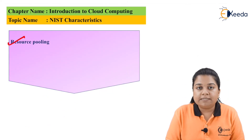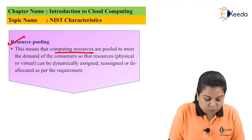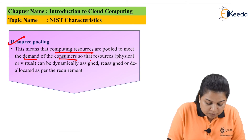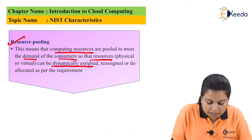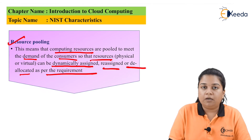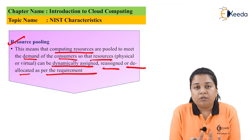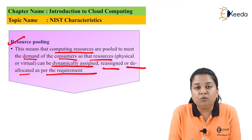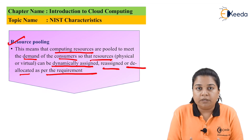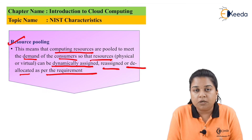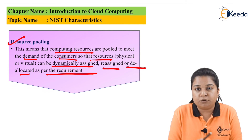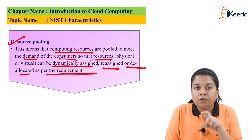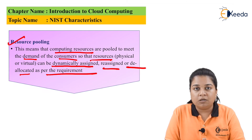Another feature is resource pooling. This means that computing resources are pooled to meet the demand of consumers, so that resources — physical or virtual — can be dynamically assigned, reassigned, or de-allocated as per requirement. Cloud computing provides a network using a shared pool of resources gathered from multiple infrastructure sources, creating a complete resource pool that provides infrastructure as a service to clients.